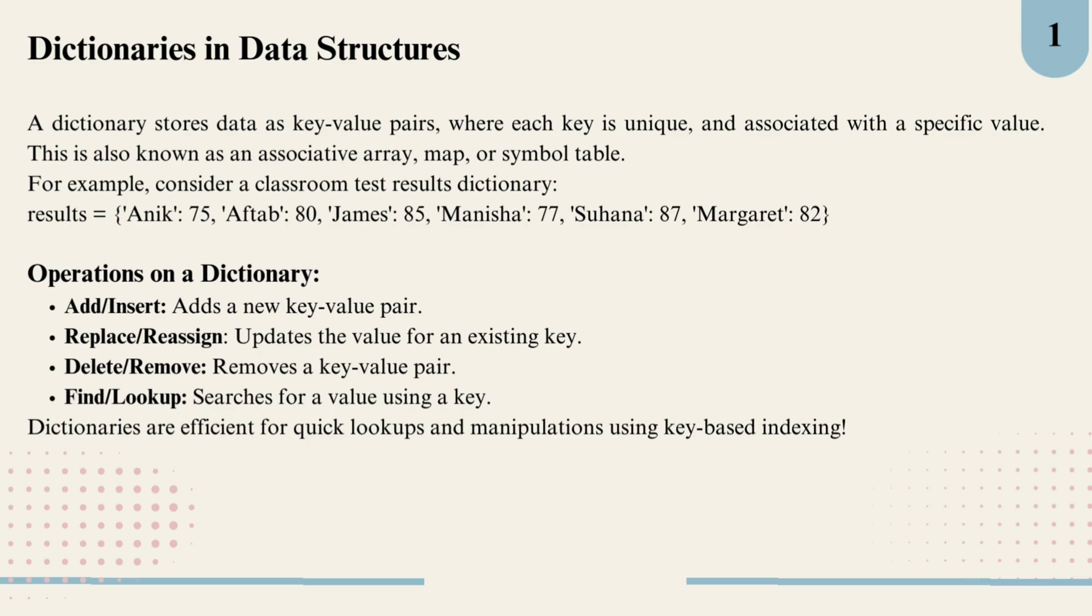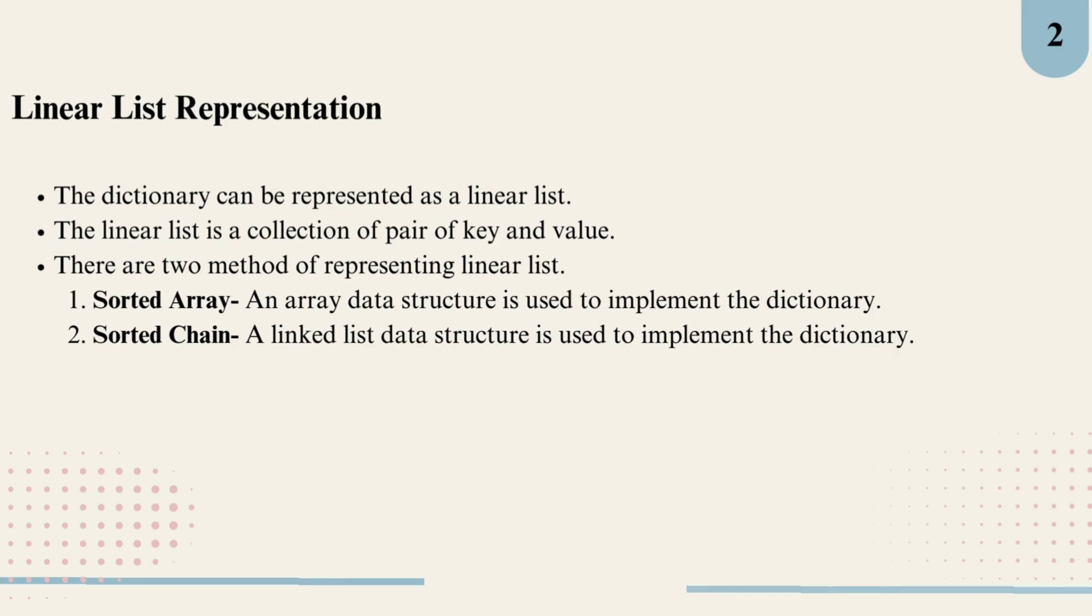So get ready as we explore dictionaries in depth, covering how to use them efficiently and why they are so important in data management. In this segment, let's talk about how a dictionary can be represented as a linear list. There are two main ways to represent this linear list: sorted array and sorted chain.